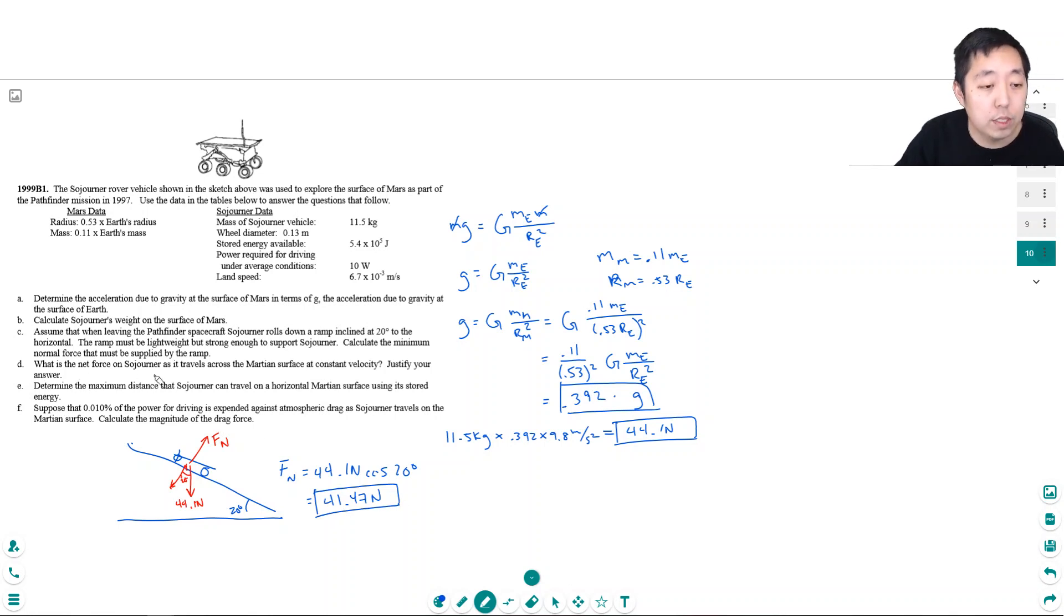Part D: What is the net force on Sojourner as it travels across the Martian surface at constant velocity? Justify your answer. This is zero. Constant velocity means acceleration is zero, because A is zero, right? So F net equals MA. If A is zero, the net force has to be zero because of constant velocity, no acceleration.